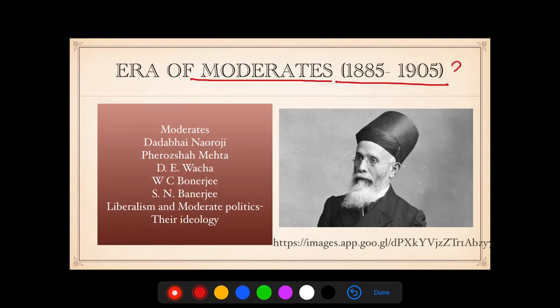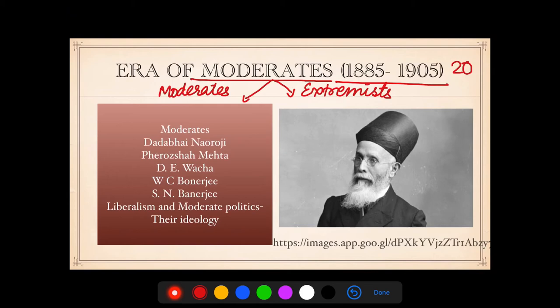We are now going to discuss the era of the Moderates, which lasted from 1885 to 1905 — a period of 20 years. The Congress is known for two types of ideologies or groups: the Moderates and the Extremists. They had separate viewpoints and ideas, and their methods of working were completely different. In this video we will discuss the Moderates, and in other videos we will learn about the Extremists.